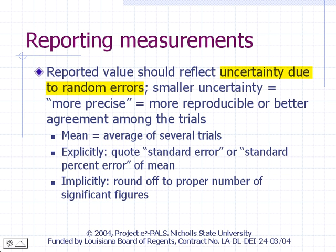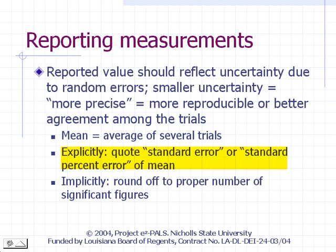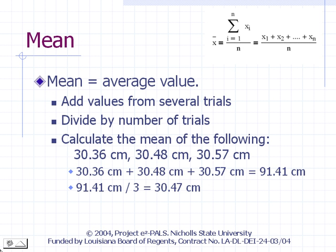We describe the precision of a set of measurements by describing the distribution of random errors using statistical formulas. Because of random errors, we say there is an uncertainty associated with any measurement we report — the word uncertainty is often used interchangeably with random error. A smaller uncertainty means better precision. It is standard practice to perform multiple trials to minimize random errors. When we report the mean of the trials, we can indicate the precision explicitly by quoting the standard error or standard percent error, or imply it by the way we round off the mean.